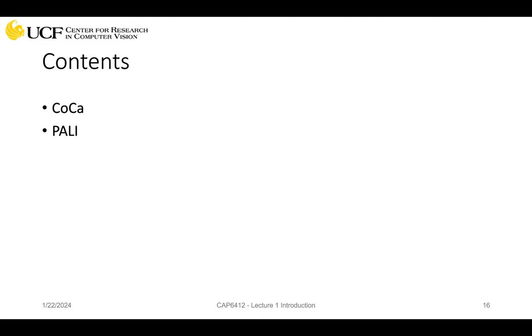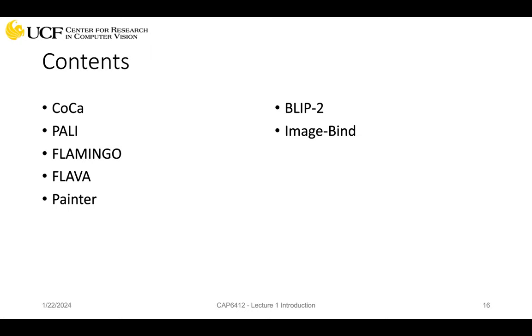I'm going to go through several of these models. My presentation will be very general to give you a feeling of all these models, and then we will go into detail when we discuss the papers. We'll talk about CoCa (contrastive captioning), Poly, Flamingo, FLAVA, Painter, and then BLIP-2, which is a special model using a Q-Former to extract information from the image based on the text prompt. We'll also talk about ImageBind and LanguageBind. In CLIP you bind image with text, but in ImageBind you can bind image with many other modalities, and LanguageBind binds with language.